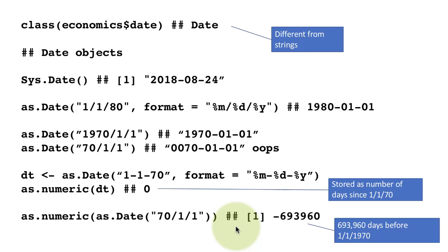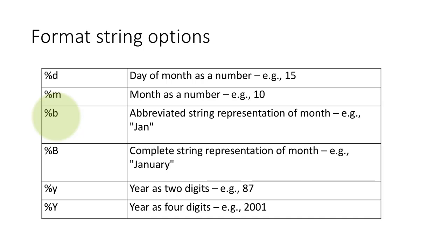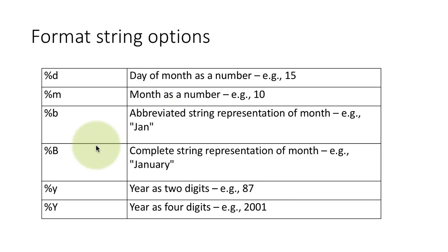You may get datasets with very different kinds of date formatting, and there are many options for conversion. %d means the day of the month as a number. %m means the month as a number. %b means the month as a three-letter abbreviation like Jan, Feb, etc. %B (uppercase) means the full month name like January, February. %y means a two-digit year, and %Y (uppercase) means a four-digit year. Within the format string, we can use these options to convert dates properly.